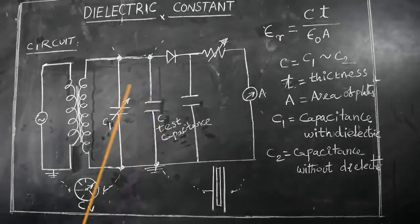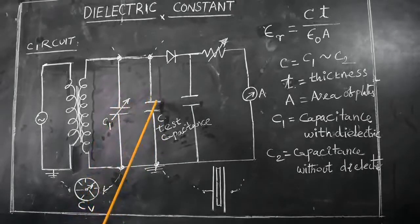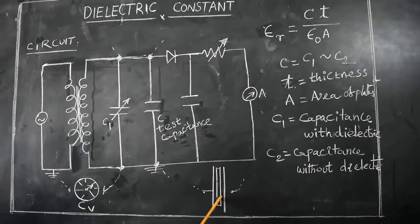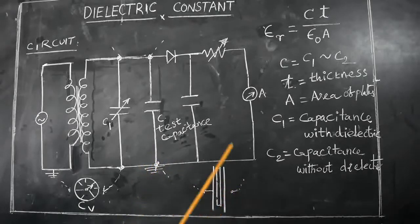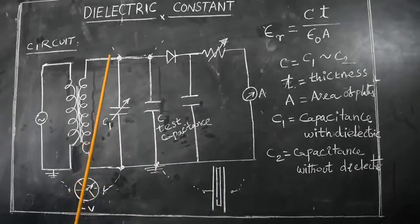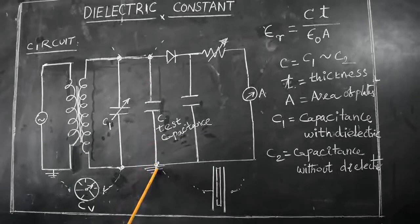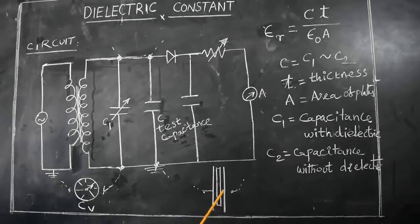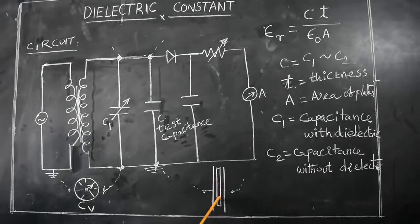This test capacitance is in parallel to C1. The test capacitance C is connected to conducting plates where the dielectric material whose dielectric constant is to be measured is placed. One connection is given to the ground point and another to the positive terminal. The capacitance of the dielectric material between the two conducting plates has a fixed value, while the variable capacitance C1 is varied.